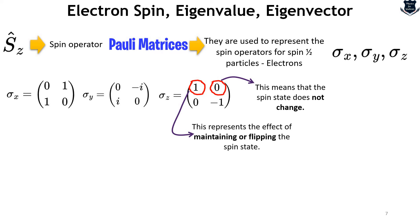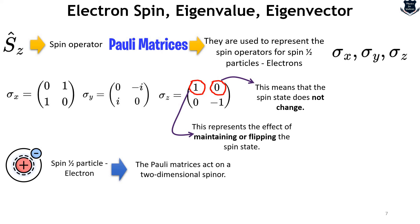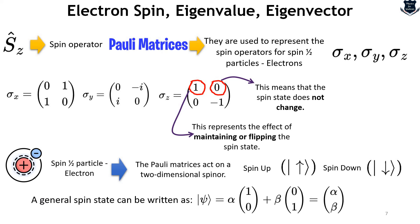For a spin-half particle like the electron, the Pauli matrices act on a two-dimensional spinor that represents the electron spin. The spinor can describe either a spin-up state or a spin-down state. Electrons can be in a superposition state, so a general spin state can be written as a combination — you can square alpha and beta to get the probability density. So from here we understand the usage of Pauli matrices as 2×2 Hermitian matrices, and what those X, Y, and Z directions actually denote.